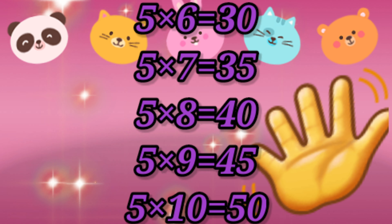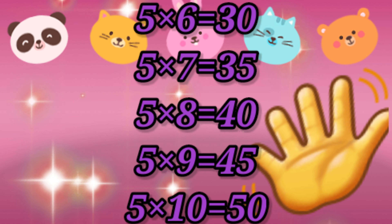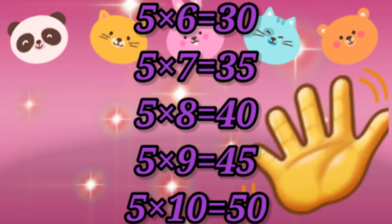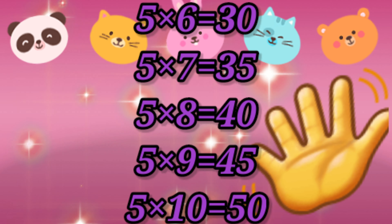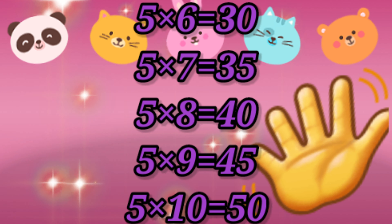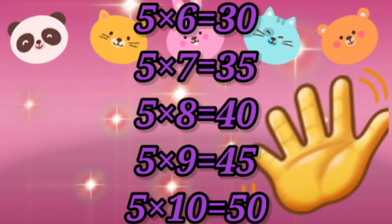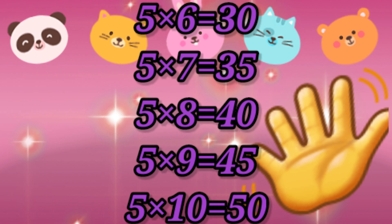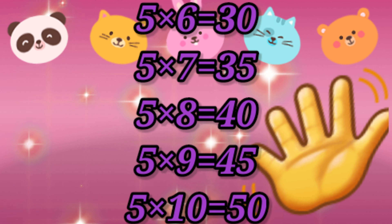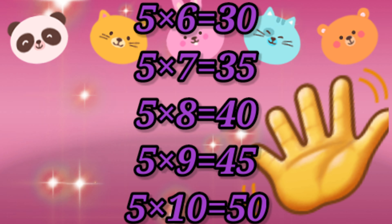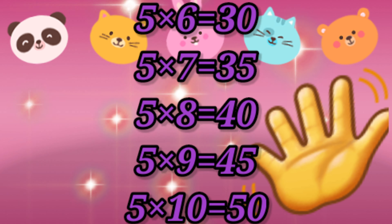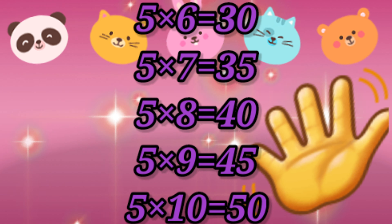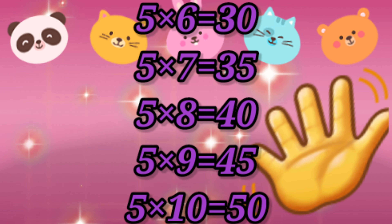5 sevens are 35. 5 eights are 40. 5 nines are 45. 5 tens are 50.